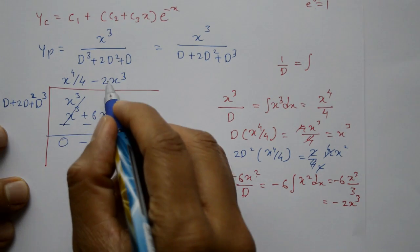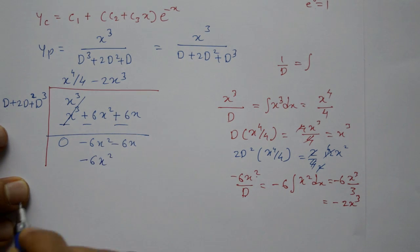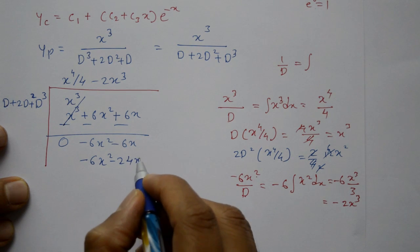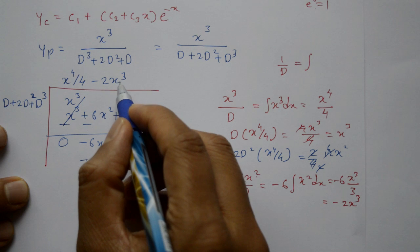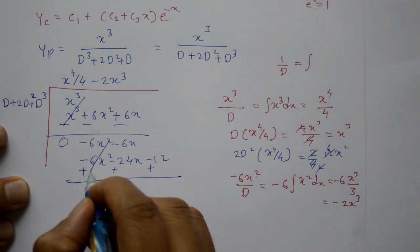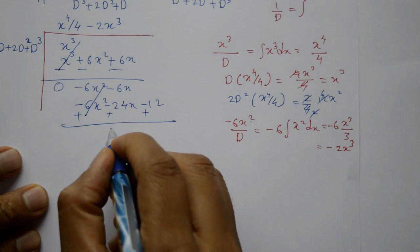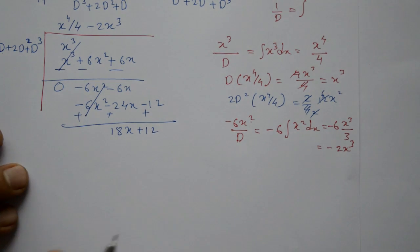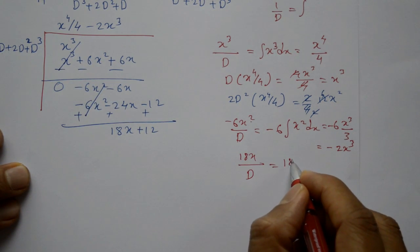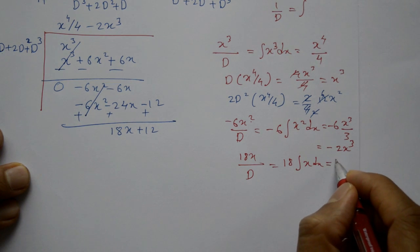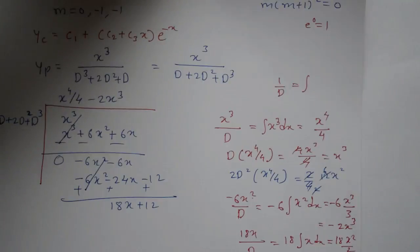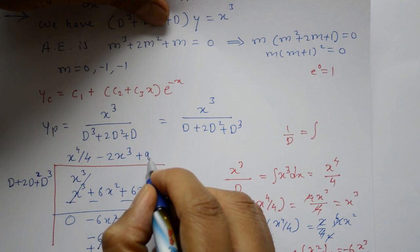So next quotient term is -2x³. Now D into -2x³ = -6x². 2D² into -2x³: differentiate twice — first gives -6x², second gives -12x, so 2D²(-2x³) = -12x. Subtracting and changing sign gives remainder 18x + 12. Cancel 18x; 18x divided by D means integrating: 18·(x²/2) = 9x².